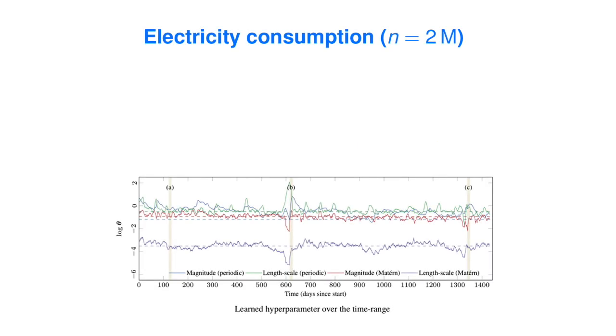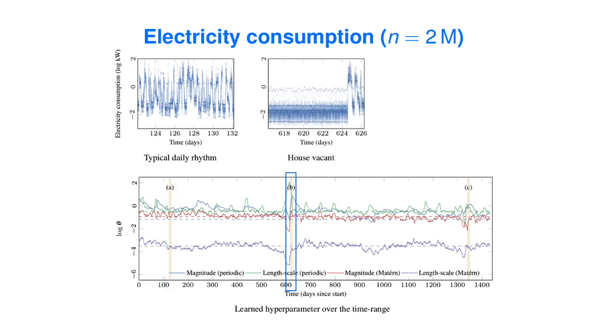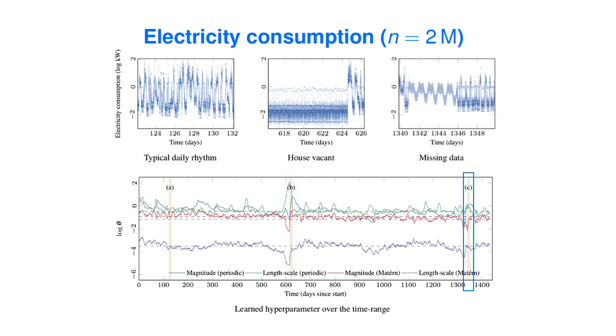We test this on modeling electricity consumption of one household. The data consists of some 2 million data points over 4 years. The model can adapt to typical daily variation, change its behavior when the house is vacant, and deal with missing observations in the data.